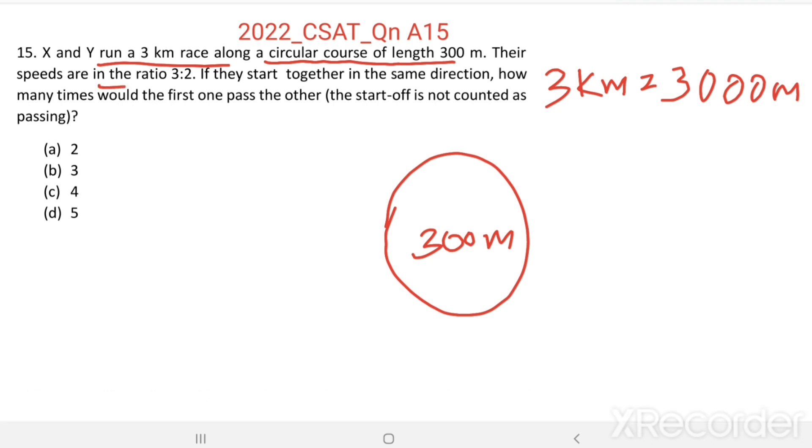Their speeds are in the ratio 3 to 2. Speed of X and Y are in the ratio 3 to 2. That means when X runs 300 m, Y runs 200 m. If they start together in the same direction, how many times would the first one pass the other?